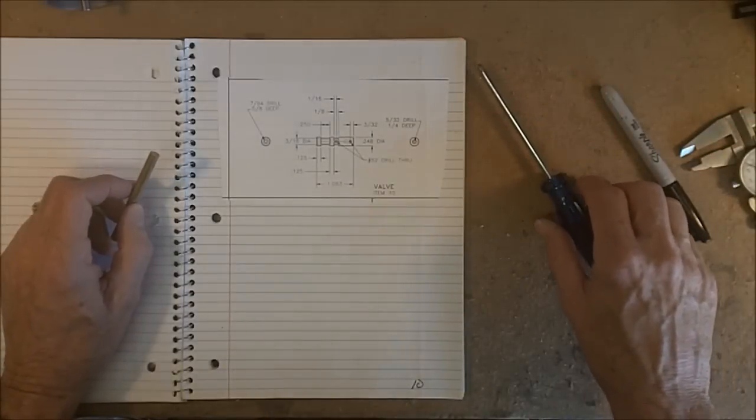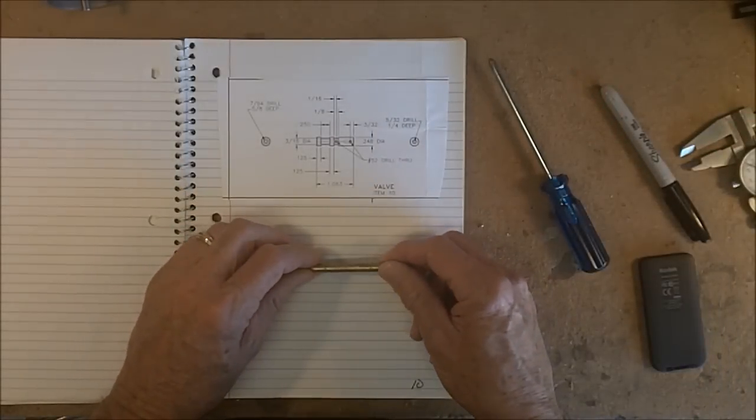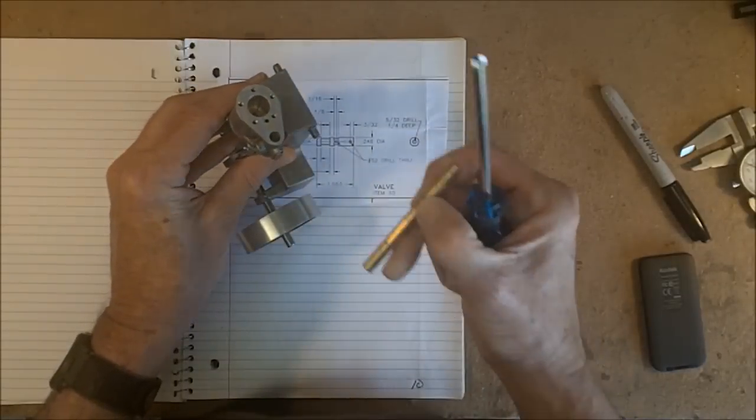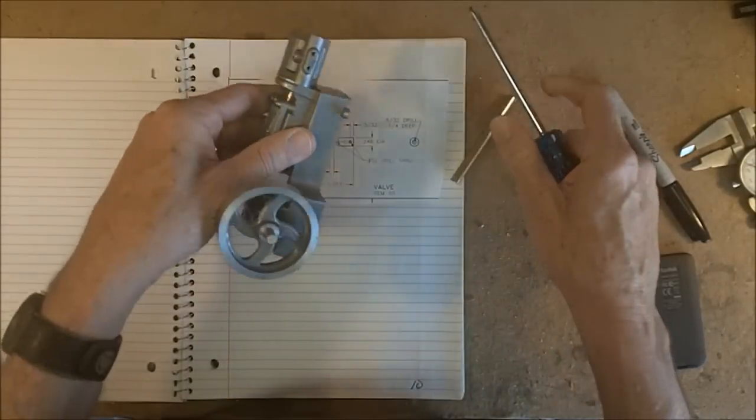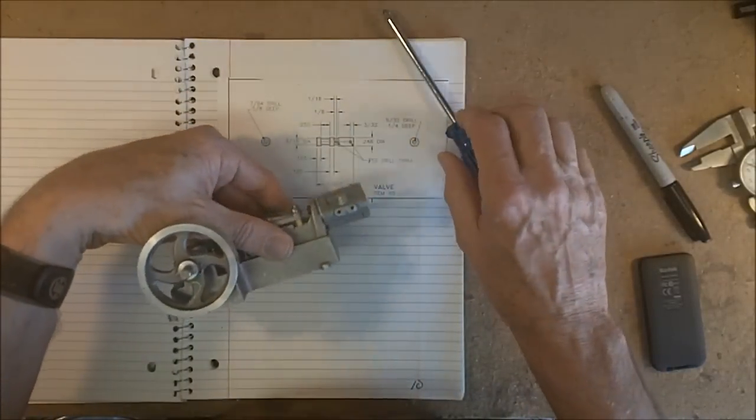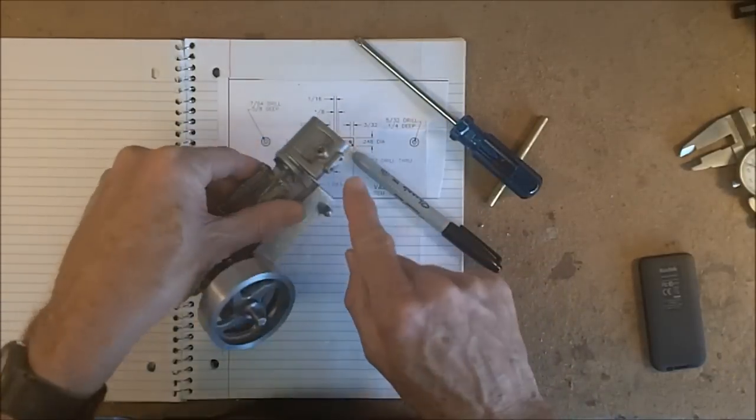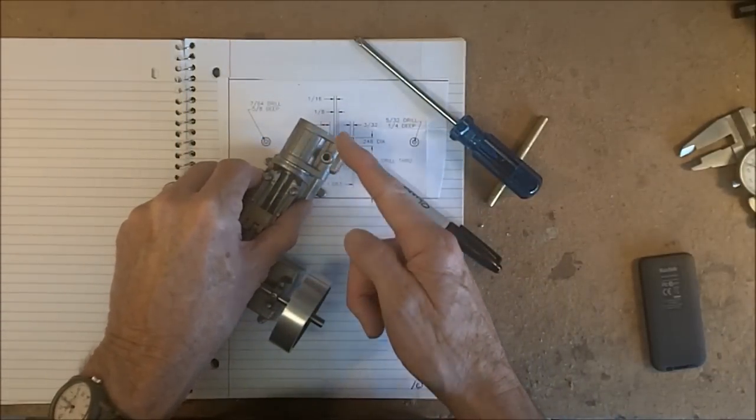The next part of the building will be the slide valve, and the slide valve is going to go inside here and slide back and forth. Now, what this does as this slides back and forth, this particular valve, it will actually route the pressure, in this case of course air pressure.